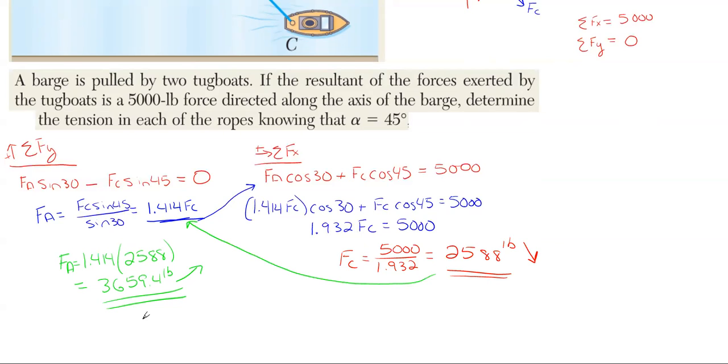So those are our two answers. If you want to double check to make sure you've done everything correctly, what you can do is revisit the F_x equation. Plug in for F_A the 3,659.4 and for F_C the 2,588, and it should roughly come out to be 5,000.